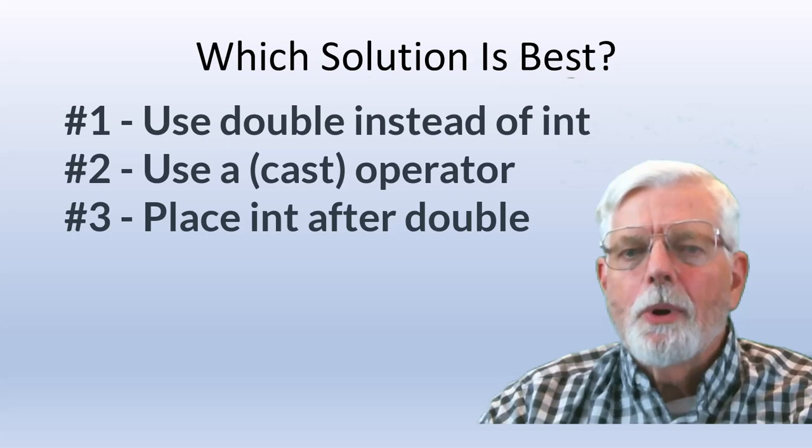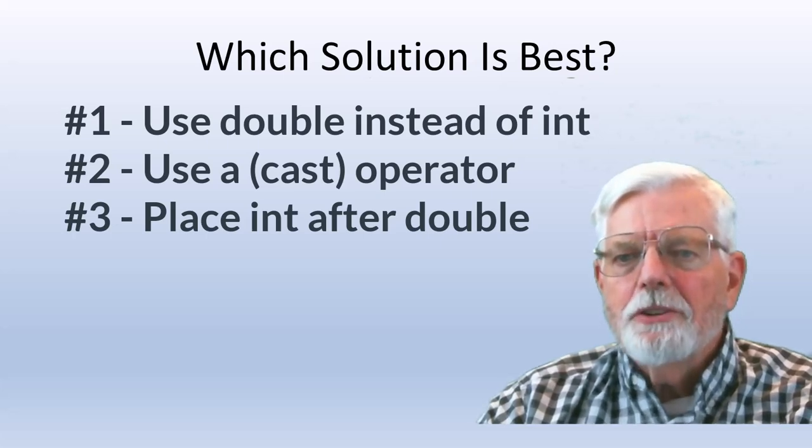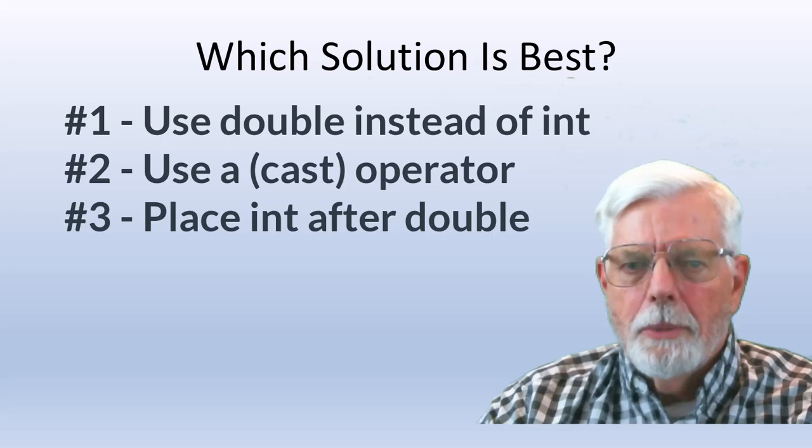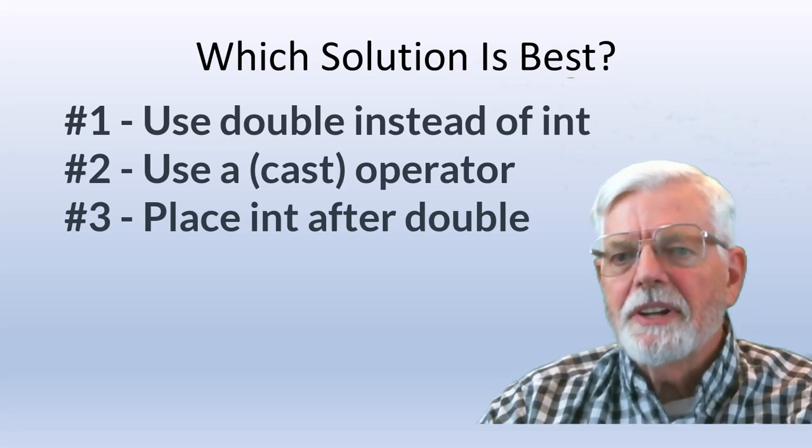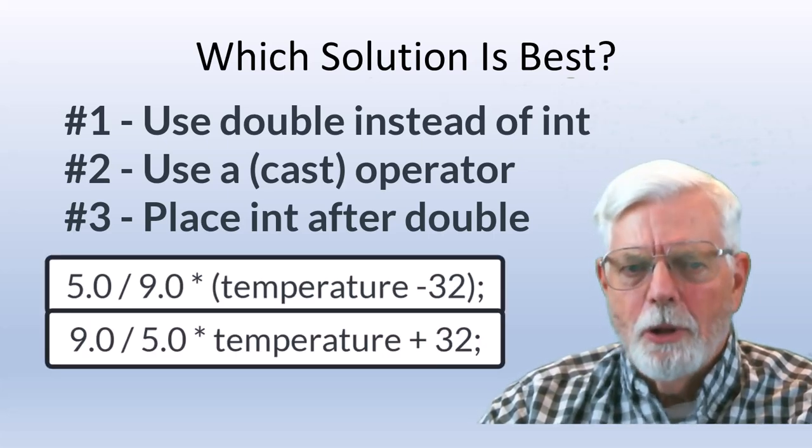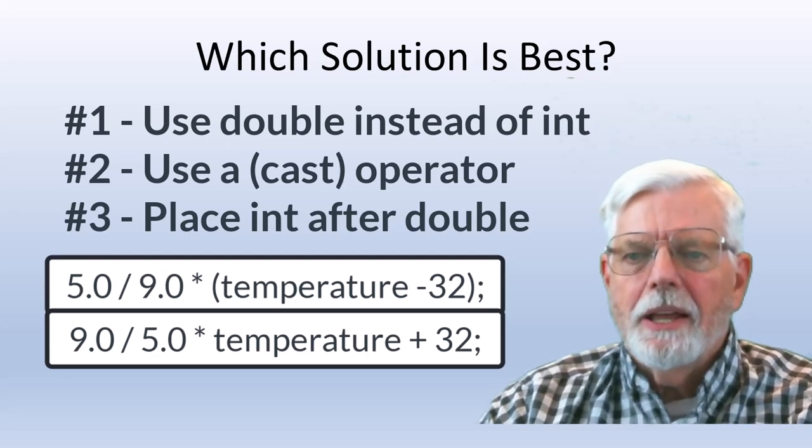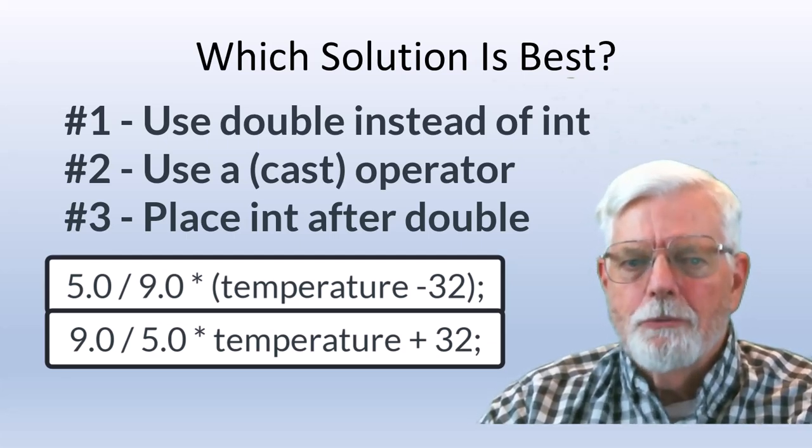When coding your programs and your mixing integers and floating point numbers, float or double, it is best to specifically declare numbers as double when you want this to happen instead of relying on the compiler to make the promotion for you.